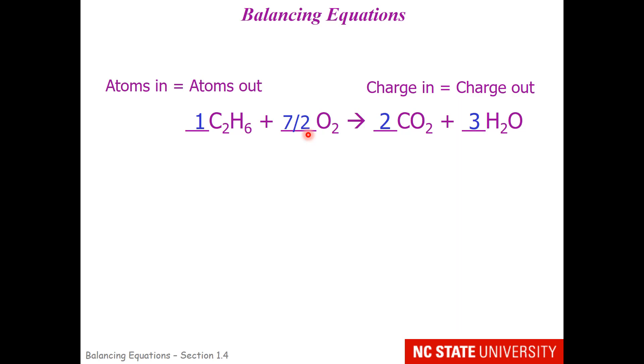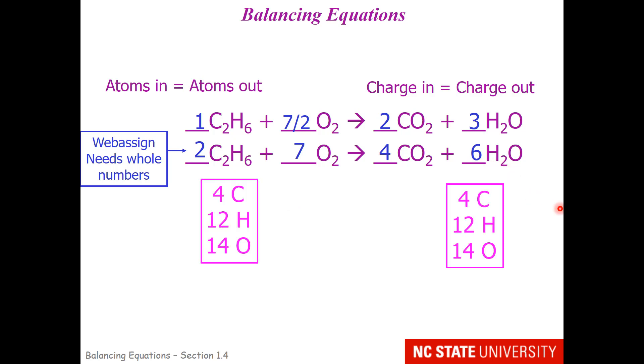A lot of times WebAssign asks that students balance their reactions with simple whole numbers. So if that is the case, we can certainly take each one of these and multiply it by two. That will get rid of the seven halves and turn it into a seven. And of course, each of the other coefficients will also be multiplied by two. If we want to double check our results, there are four carbons on each side. There are 12 hydrogens on each side, and there are 14 oxygens on each side. The charge on the reactant side is zero, and the charge on the product side is zero.